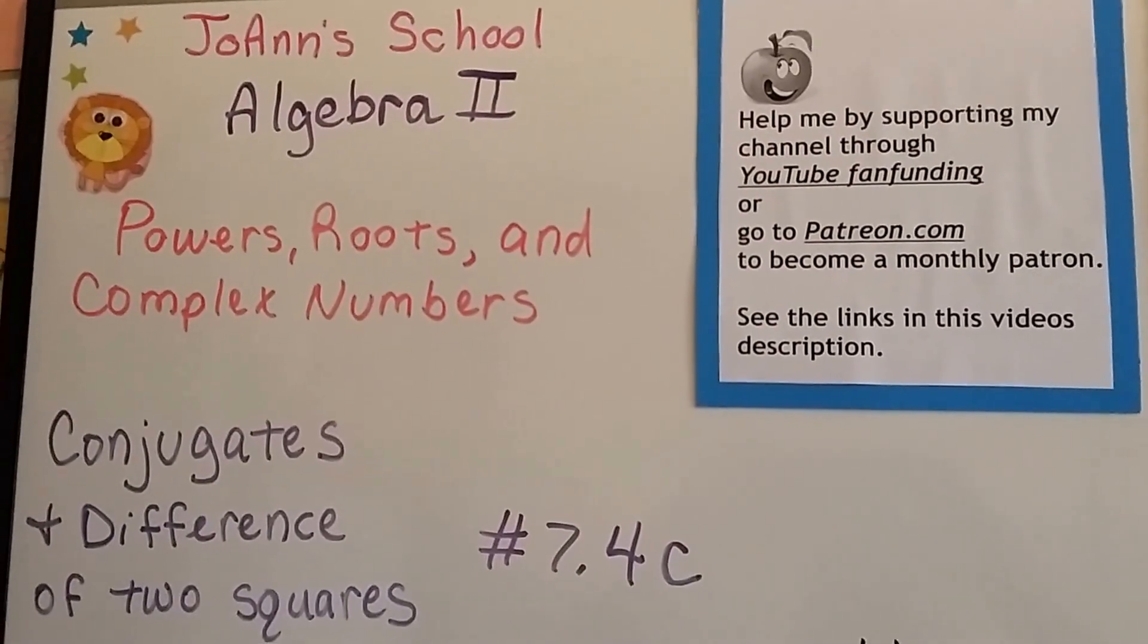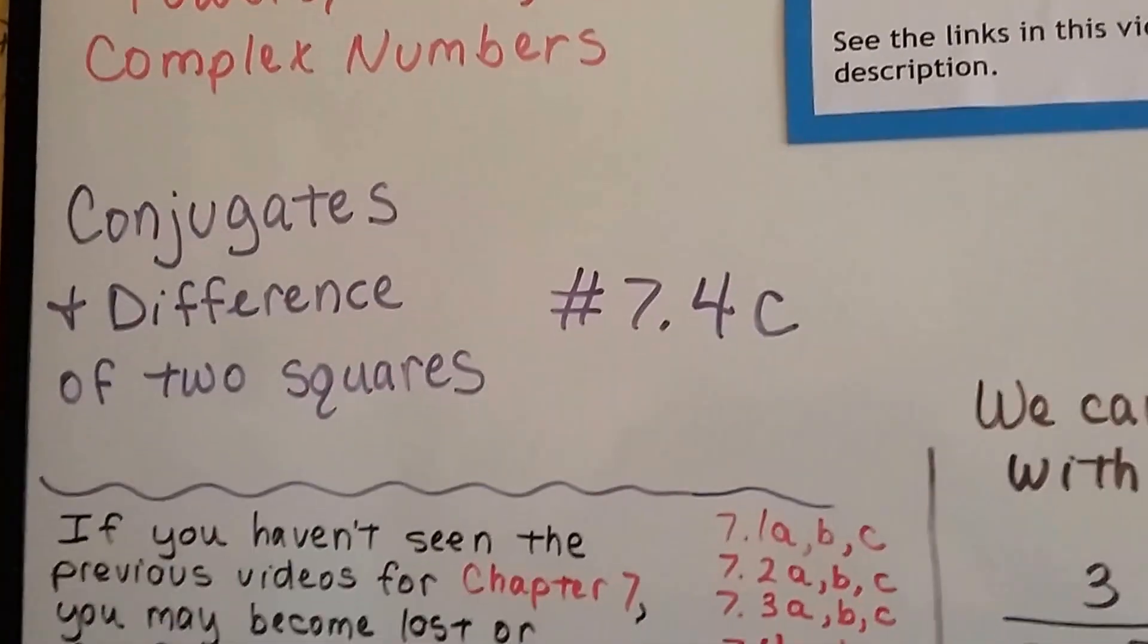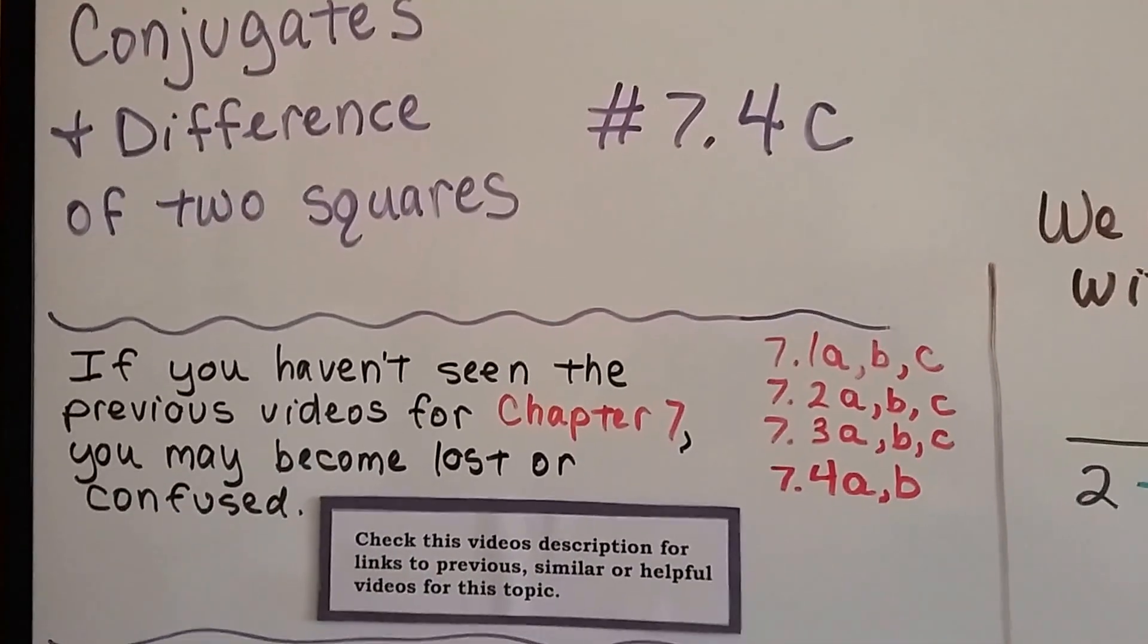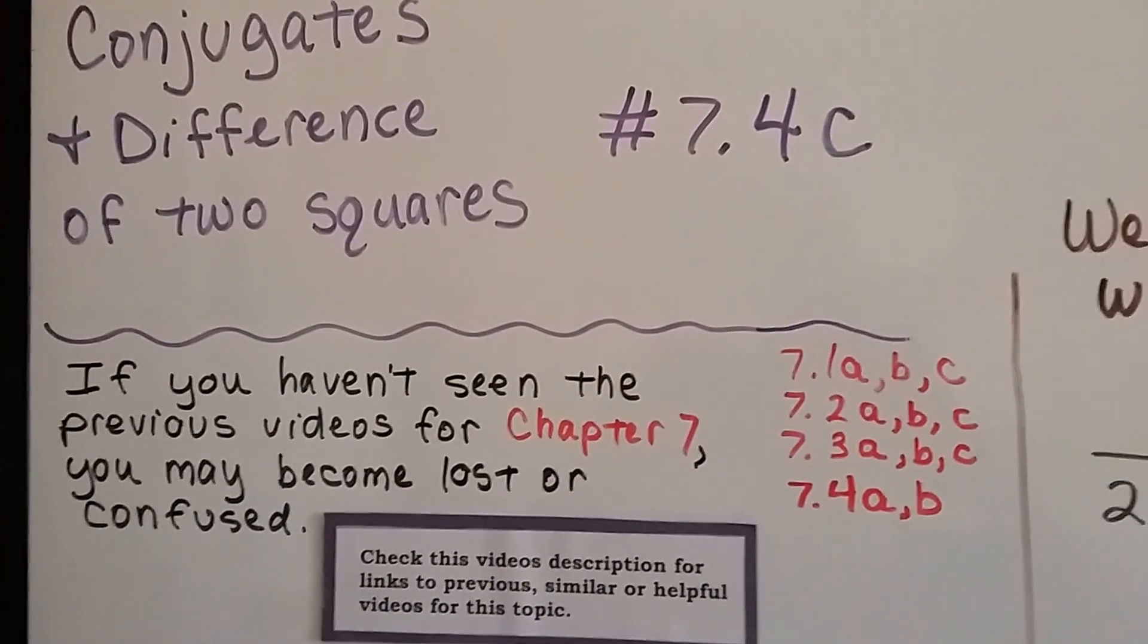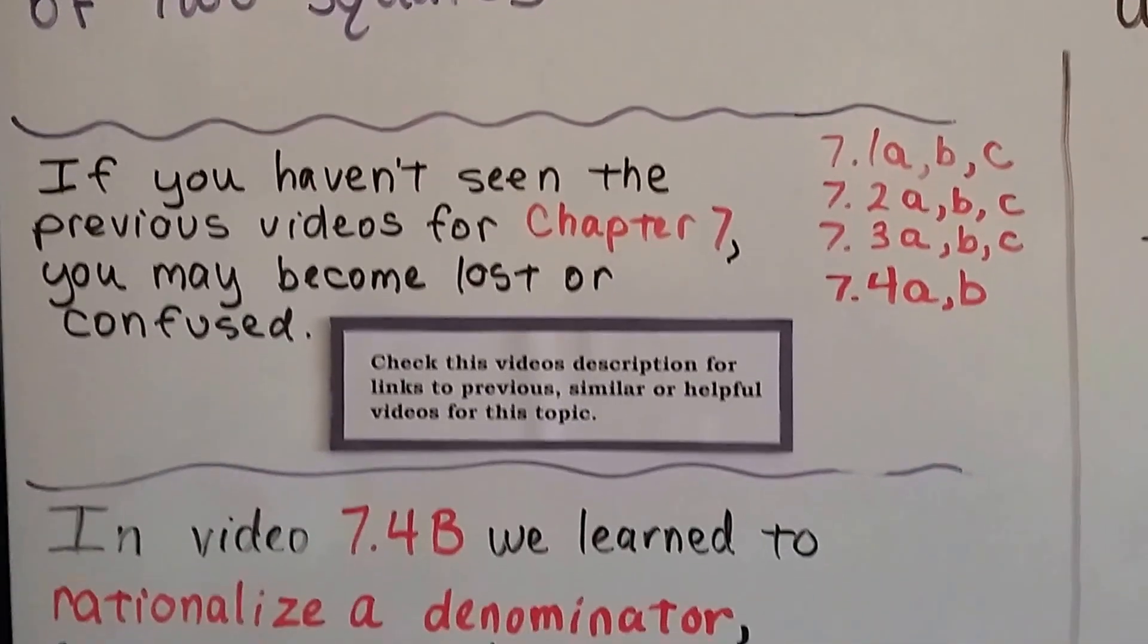Algebra 2, 7.4c, Conjugates and Differences of Two Squares. Now we've got 11 previous videos for Chapter 7. If you haven't seen them and you become lost or confused, you can click on this video's description to watch them.